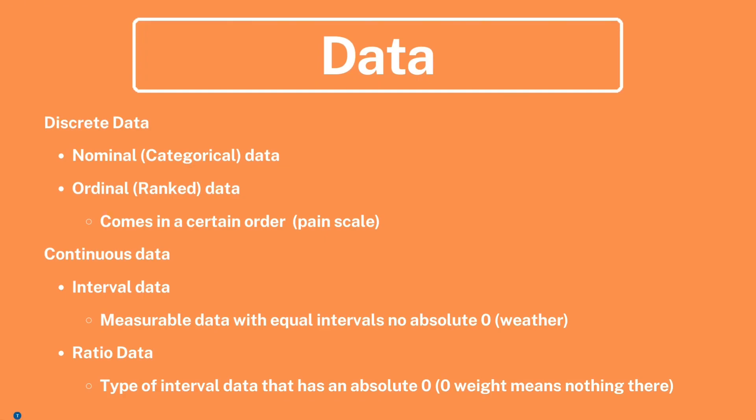In the realm of data analysis, we encounter various types of data, each offering unique insights. First, we have discrete data, which encompasses two subcategories: nominal data and ordinal data. Nominal data represents categorical information without any inherent order, such as colors or types of animals. In contrast, ordinal data introduces a ranking or order to the categories, making it suitable for situations like a pain scale where the order of pain severity matters.